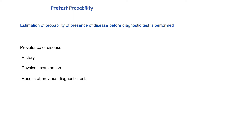Some typical signs and symptoms can significantly affect pre-test probability. For example, presence of guarding and rigidity on abdominal examination are highly suggestive of peritonitis and will significantly increase pre-test probability of peritonitis. So presence or absence of these signs and symptoms can significantly affect pre-test probability.